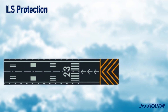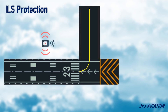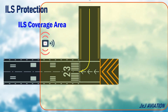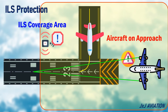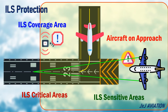ILS Protection. If any fixed object or vehicles, such as an aircraft, is within the ILS coverage area, it can cause disruptions to the ILS signals. These signal disruptions will have an impact on aircraft which are on the approach path using the ILS information. So, to protect the ILS signals during ILS operations, ILS critical areas and ILS sensitive areas are marked in the airport.